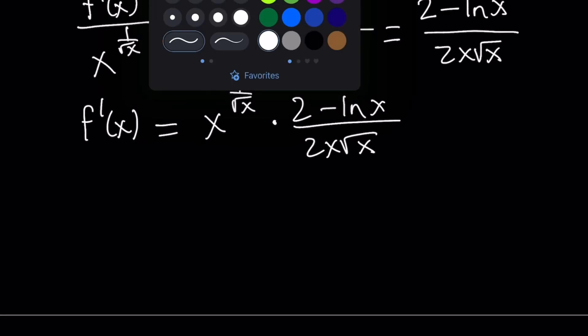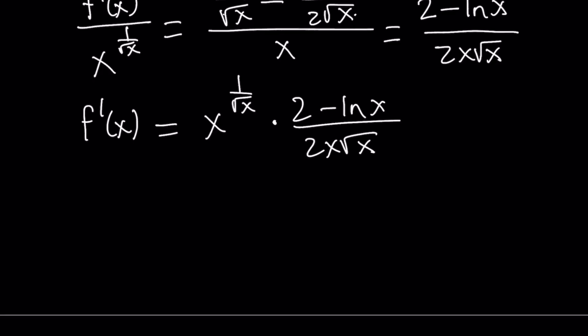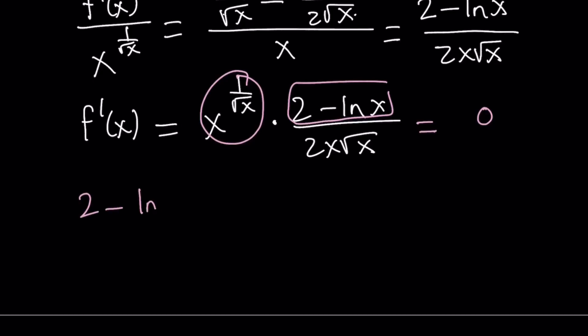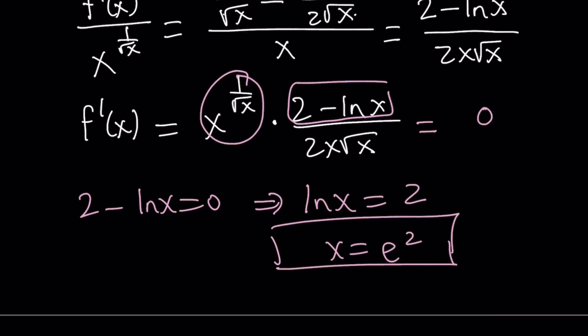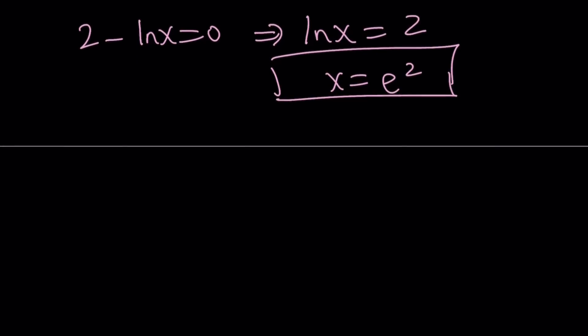So if you have a function to the power of another function, you can use the ln function to differentiate both sides. We got the derivative, which is important for looking at the behavior of the function. Let's set the derivative equal to zero to find critical points — where the derivative is zero or fails to exist — which could be maxima, minima, inflection points, or vertical tangents. Since everything else is positive for positive x, we set the numerator 2 minus ln x equal to zero: ln x equals 2, so x equals e squared, approximately 7.3.